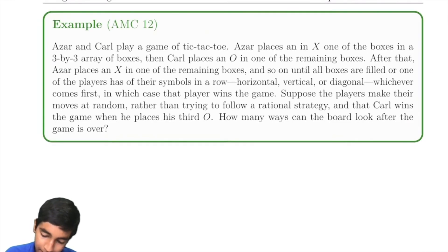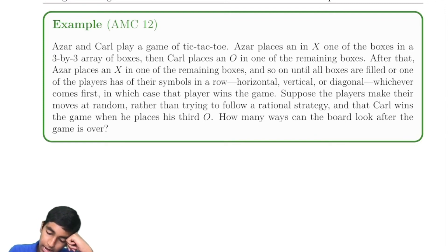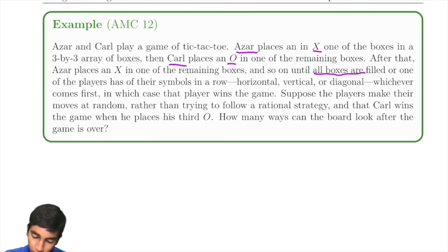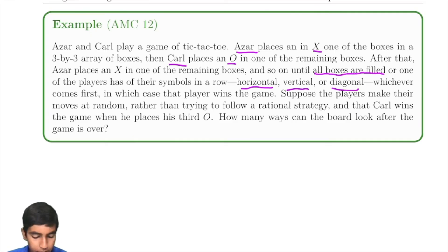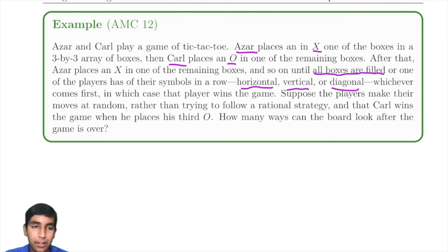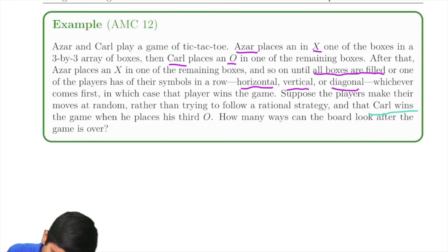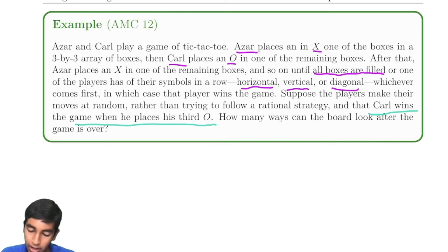Next, we have Azar and Carl playing tic-tac-toe. Azar places an X, then Carl places an O, alternating until all boxes are filled or one player gets three symbols in a row — horizontal, vertical, or diagonal. The players move at random. We need to find how many ways the board can look when Carl wins by placing his third O.